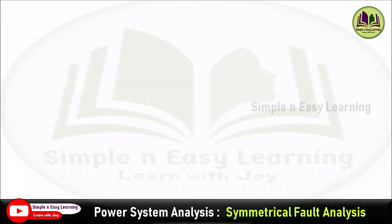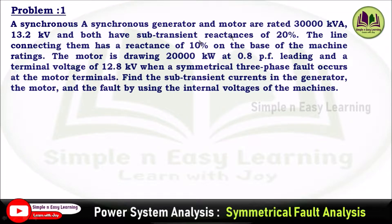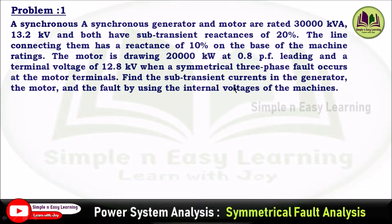Fault analysis using Thevenin's theorem, solved problem number 1. A synchronous generator and a motor are rated 30,000 kVA, 13.2 kV, and both have sub-transient reactance of 20%. The line connecting them has a reactance of 10% on the base of machine rating. The motor is drawing 20,000 kW at 0.8 power factor leading and a terminal voltage of 12.8 kV. When a symmetrical three-phase fault occurs at the motor terminals, find the sub-transient current in the generator, the motor, and the fault by using internal voltages of the machines.